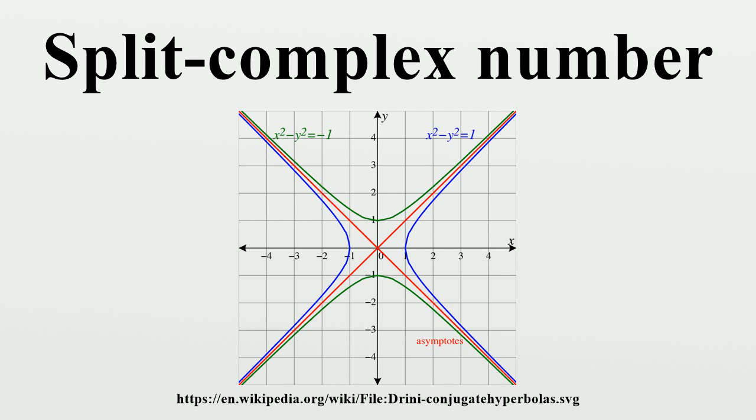Multiplying by λ preserves the geometric structure, taking hyperbolas to themselves and the null cone to itself. The set of all transformations of the split complex plane which preserve the modulus forms a group called the generalized orthogonal group O(1,1).